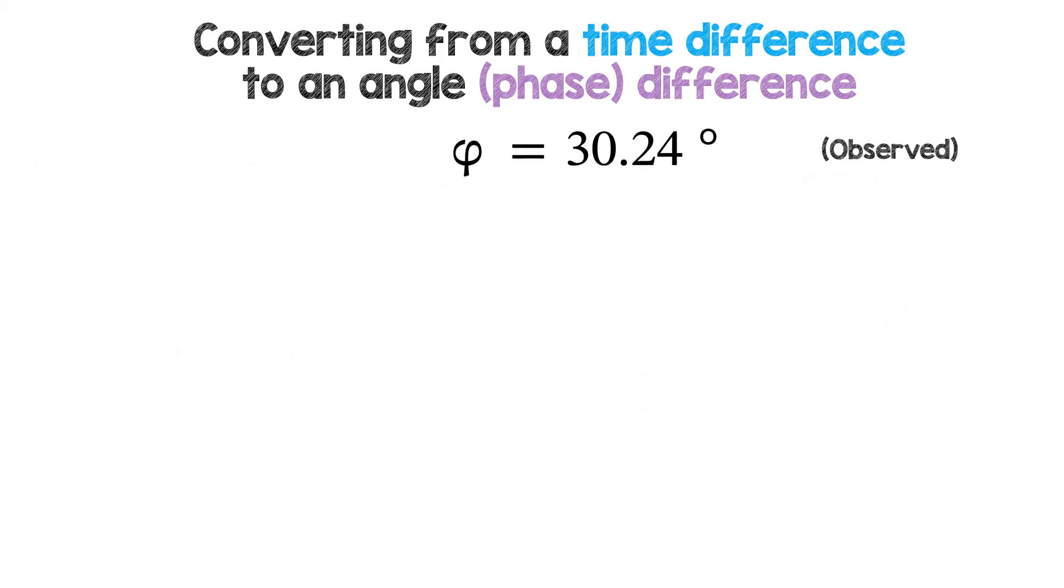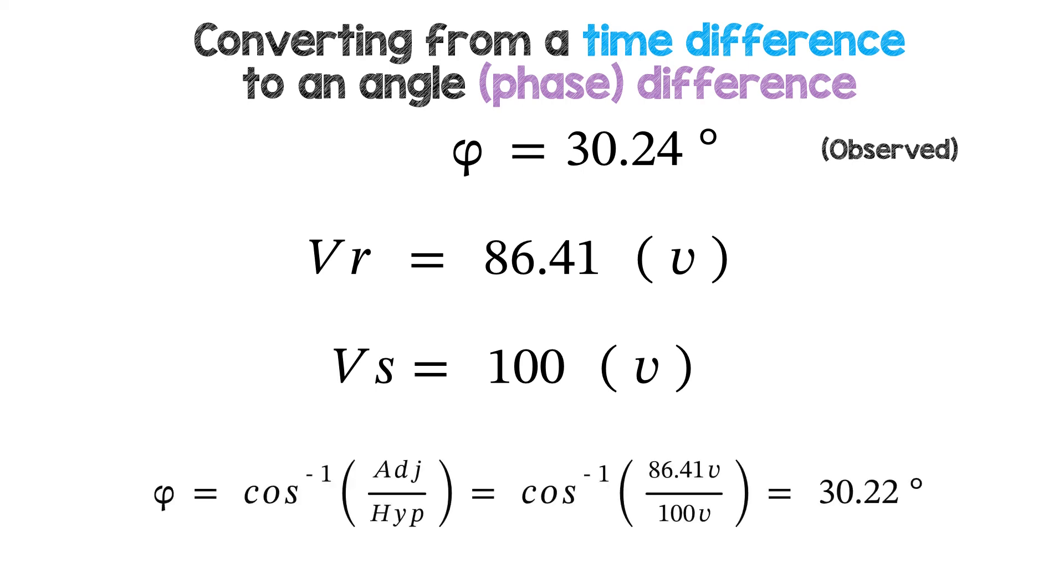Let's compare it to the theoretical. The resistor voltage can be found to be 86.41 volts from the probes or the graph, and that's the adjacent side. The supply voltage is the hypotenuse and was 100 volts.